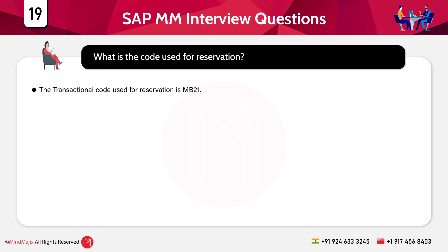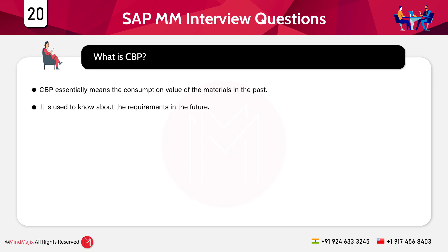The next question is: what is the code used for reservation? The transaction code for reservation is MB21. In an actual interview, this question may also be asked as: what is the T-code for a stock overview? The T-code for a stock overview is MMBE.